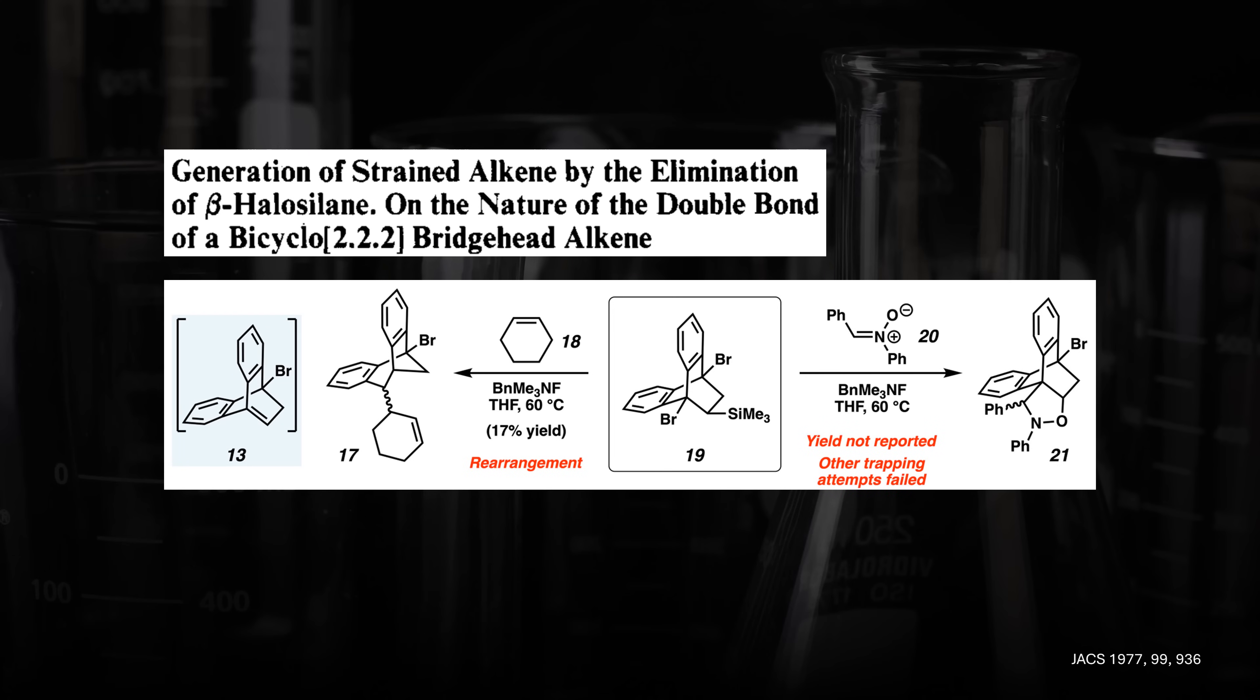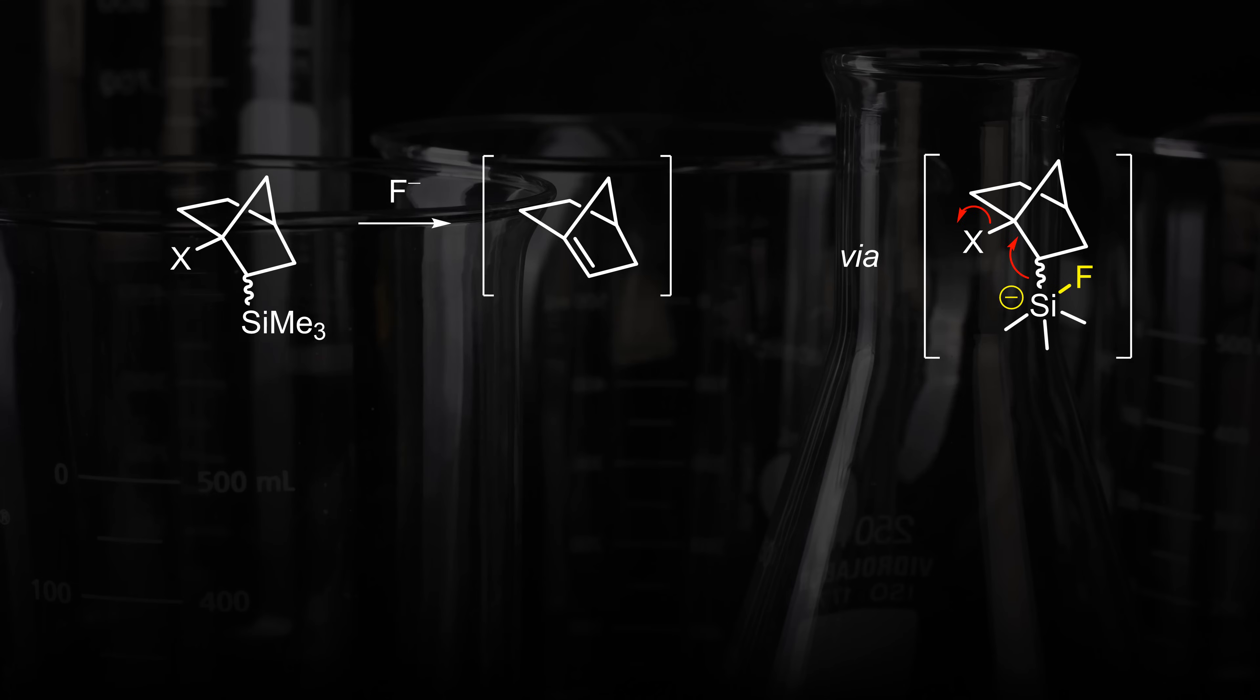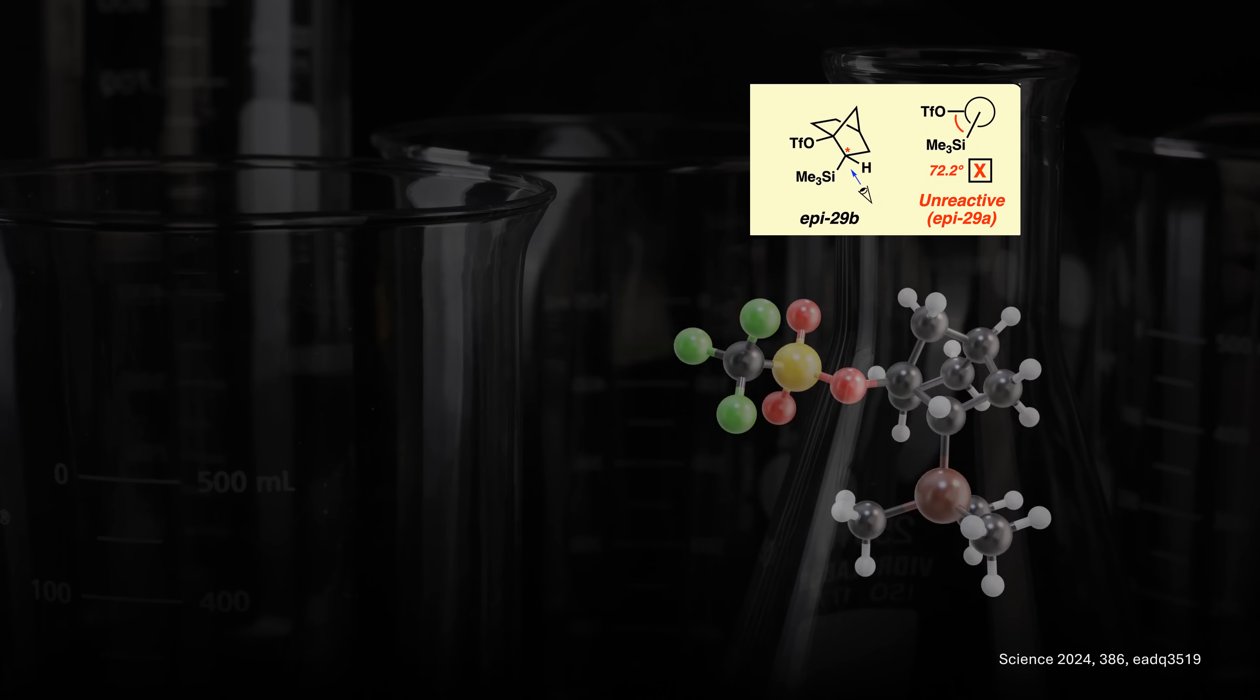One main challenge is that anti-Bredt olefins rearrange to try to get energetically more comfortable. This leads to side products like in the left example where the olefin rearranged to a carbene prior to insertion into a CH bond. This literature precedent did note one successful 3 plus 2 cycloaddition but didn't report any yield, so it was likely low single-digit percent at best.